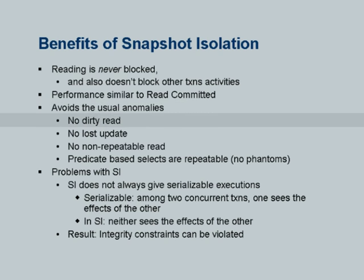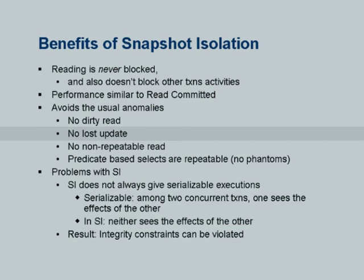It avoids many common problems. The first problem is dirty read: a dirty read is a value which has not been committed. With snapshot isolation there is no dirty read — the snapshot contains only committed updates, any uncommitted update is not part of the snapshot. No lost update: a transaction did an update and that update was clobbered by somebody else who never read that value. Because concurrent transactions cannot write to the same item, the lost update problem does not occur.